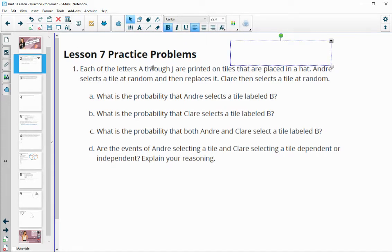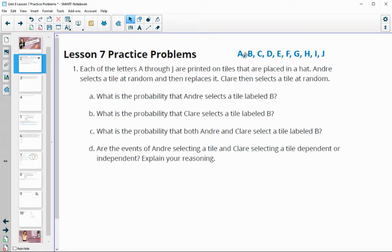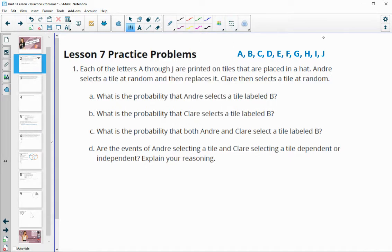For number one, it says each of the letters A through J are printed on tiles that are placed in a hat. Andre selects a tile at random, then he replaces it. Claire then selects a tile at random. So if we're going to take a look at the letters A through J, that is a total of 10 letters. We have 10 letters in each one.